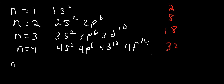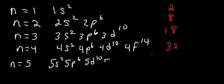In the fifth energy level, there are five sublevels: 5S², 5P⁶, 5D¹⁰, 5F¹⁴, and the next one is G, which is going to have 18. Notice that the electrons continue to add by 4. This gives you a total of 50 electrons.